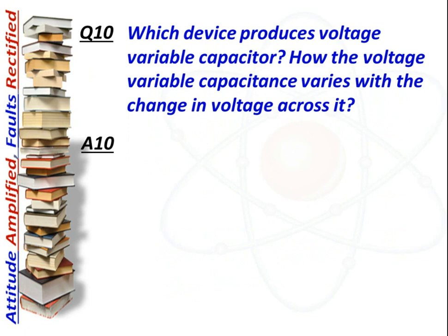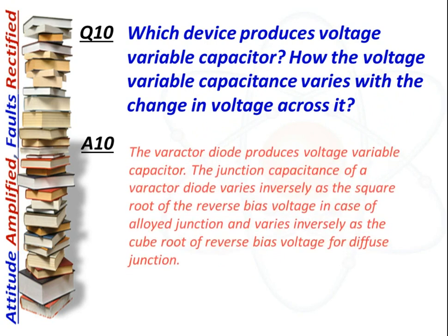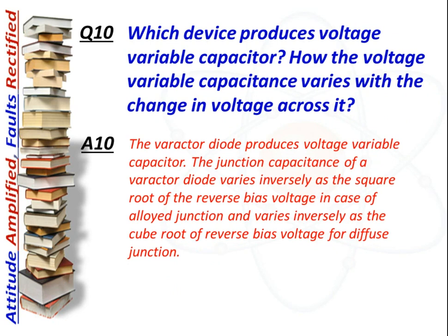Next question: Which device produces a voltage variable capacitor? How does the voltage variable capacitance vary with the change in voltage? Answer: The varactor diode produces a voltage variable capacitor. The junction capacitance varies inversely as the square root of the reverse bias voltage for an alloyed junction, and inversely as the cube root of reverse bias voltage for a diffused junction.